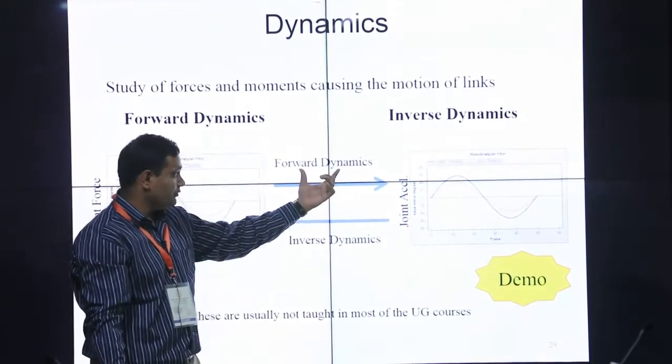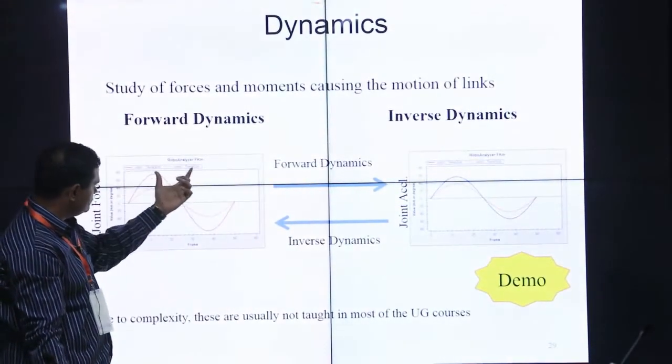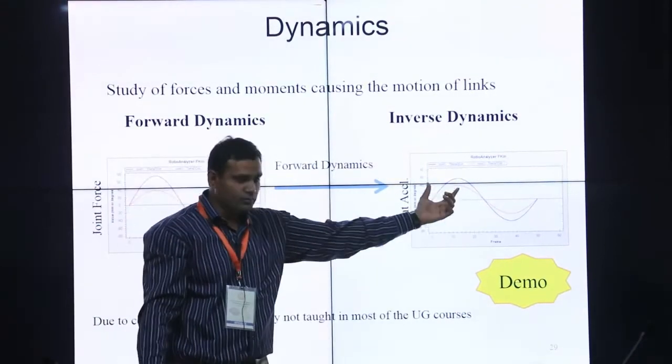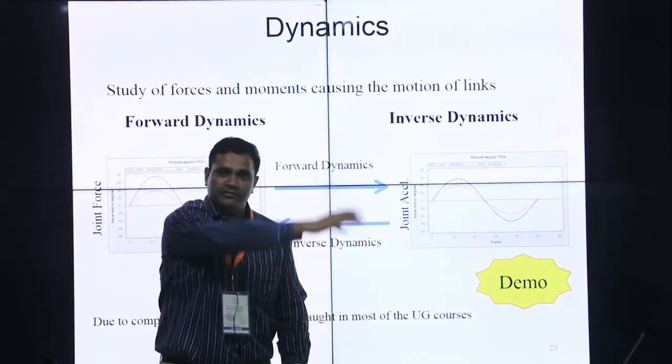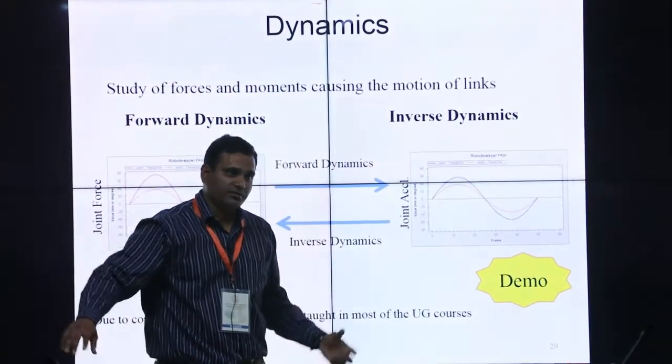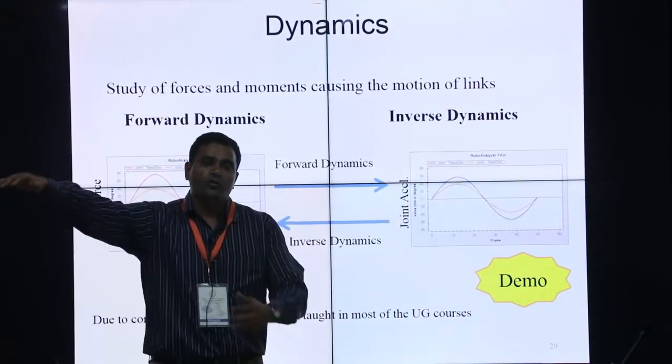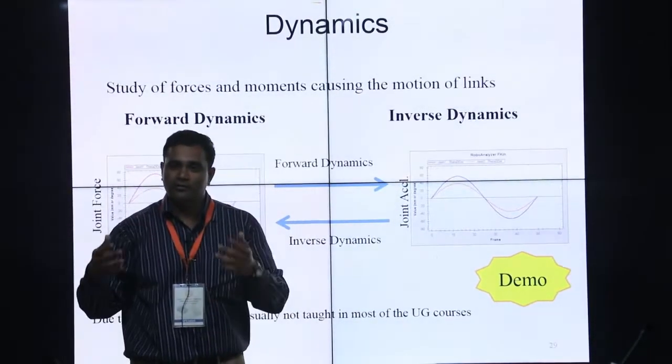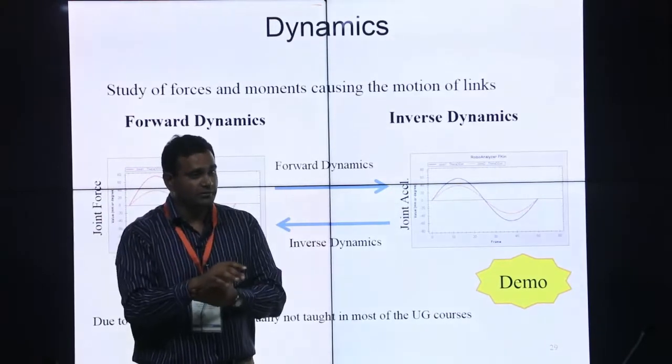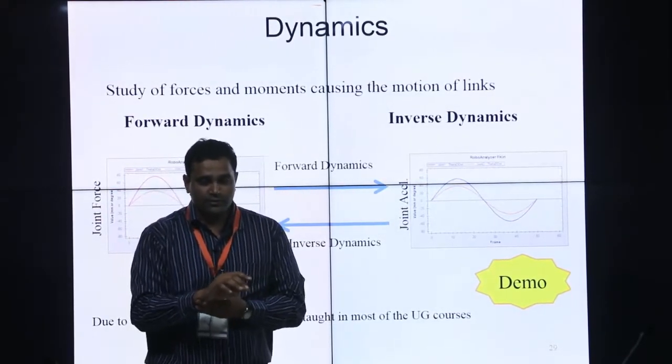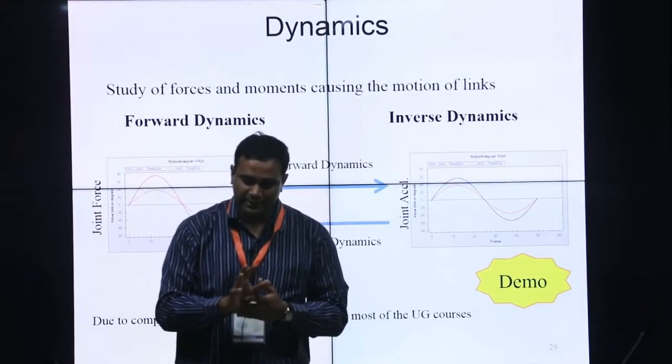Forward dynamics is torque to motion - how my robot moves. Inverse dynamics is for a particular motion, what are the different torques that are required in each joint? So technically, inverse dynamics is more useful...